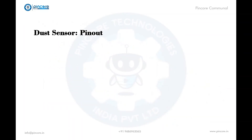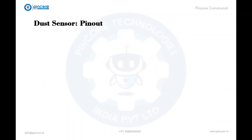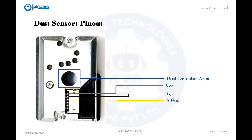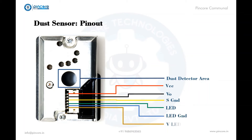The dust sensor first has the dust detector area — when light falls here, the dust particles are detected. The pins are: VCC, V-out (V naught), S, Ground, LED, LED Ground, and B-LED.